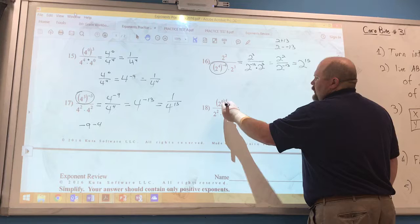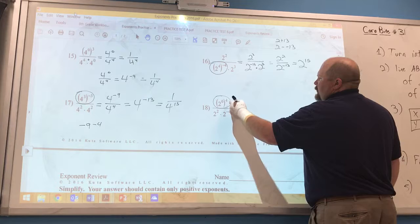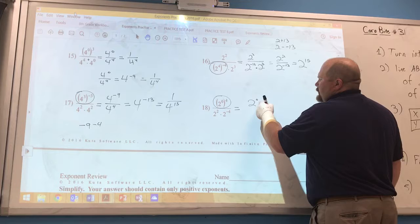Number 18. We're going to go ahead and start with these parentheses. So 2 to the 0 power times 4. So this is power to a power and it's going to be 2 to the 0 because 0 times 4 is 0.